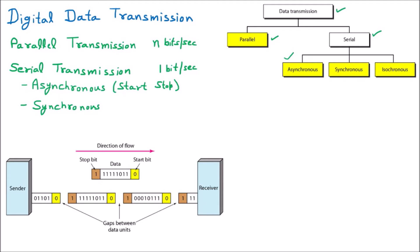Then we discussed asynchronous communication, which means there is no fixed timing of data transmission. As shown in the diagram, there are variable gaps — you don't know at what time data will be sent. Then we discussed synchronous communication, where timing is very important and there are no gaps in transmission. If gaps do occur, they are filled with idle signals of zeros and ones. However, the problem with synchronous is that it does not work well for real-time video and audio transmission.